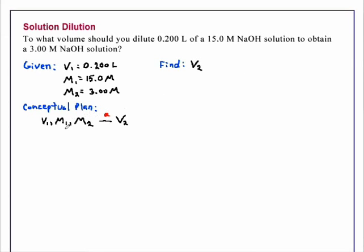And that relationship that we use for all dilutions is M1, the molarity of the concentrated solution, times V1, the volume of the concentrated solution, is equal to M2, the molarity of the dilute solution, times V2, the volume of the dilute solution. So this is a relatively simple solution.